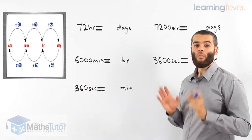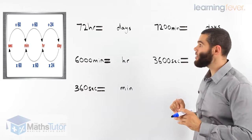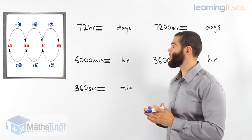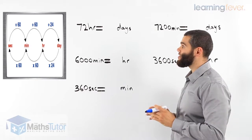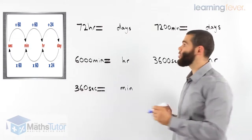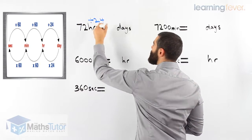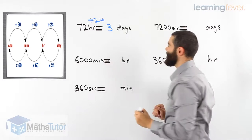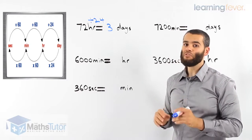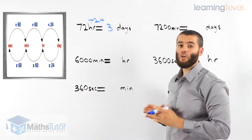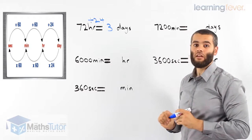Now we're going to convert from a smaller unit of time to a larger unit of time, following a similar procedure. Looking at our diagram, we're going from hours to days, and going from hours to days we divide by 24. So 72 divided by 24 gives three days — there are 72 hours in three days. Always show your working out. Even if you're using a calculator, you can make mistakes, so showing working out means you'll at least get marks for it. It's a very important good habit.